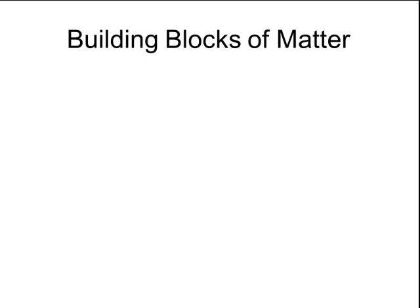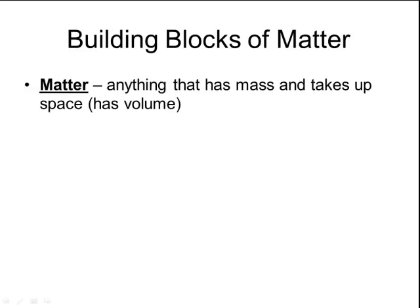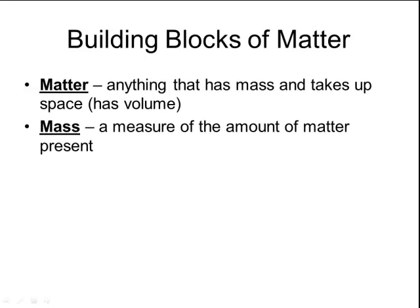You already know that chemistry is the study of the composition, the structure, and the properties of matter, and the changes that that matter undergoes. So what exactly is matter? Matter is anything that has mass and takes up space. When you say that something takes up space, you're saying that it has volume. Mass is just a measure of the amount of matter that is present, and normally we measure mass with an electronic balance.